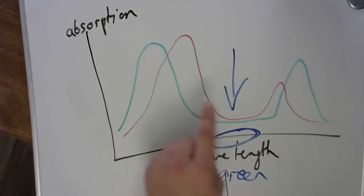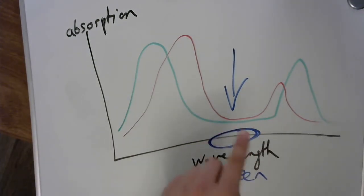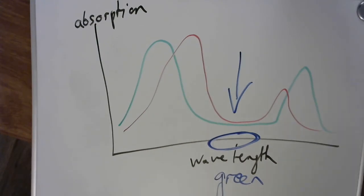So since no pigments in plants absorb that wavelength, this is the wavelength that is reflected to our eyeballs, and this is why we see plants green, because they don't use that energy, that wavelength.